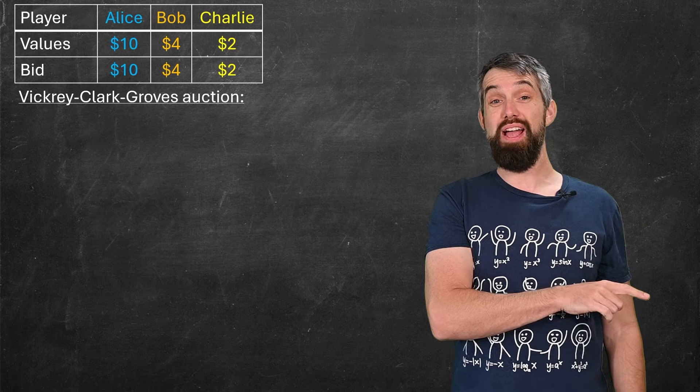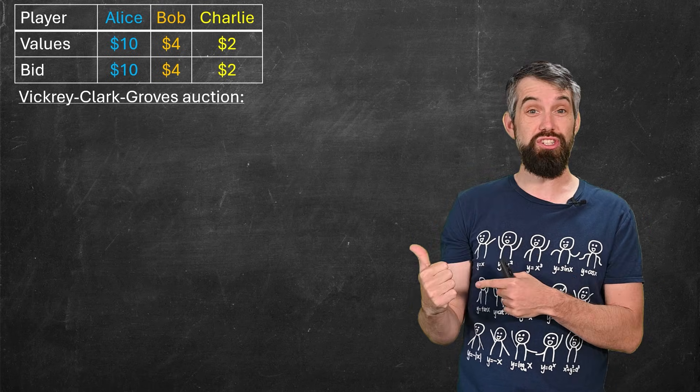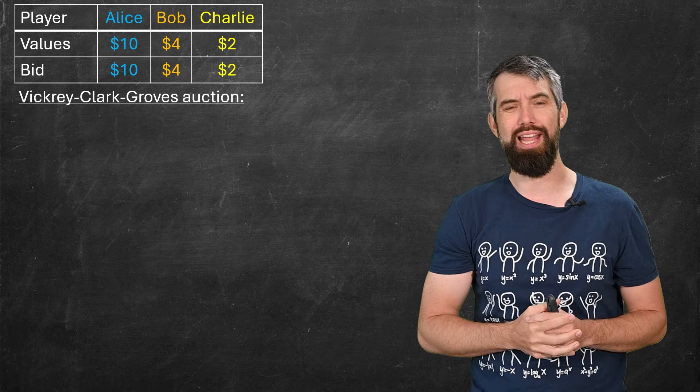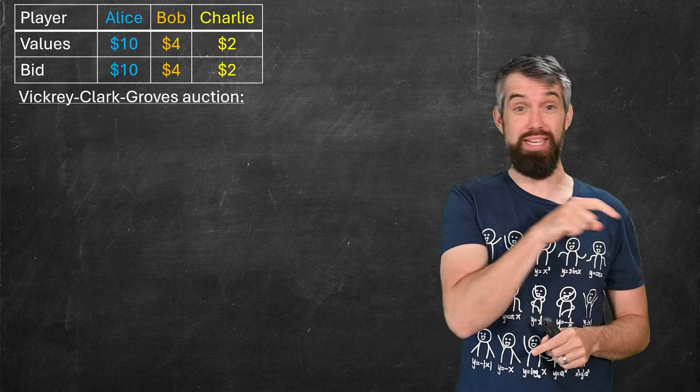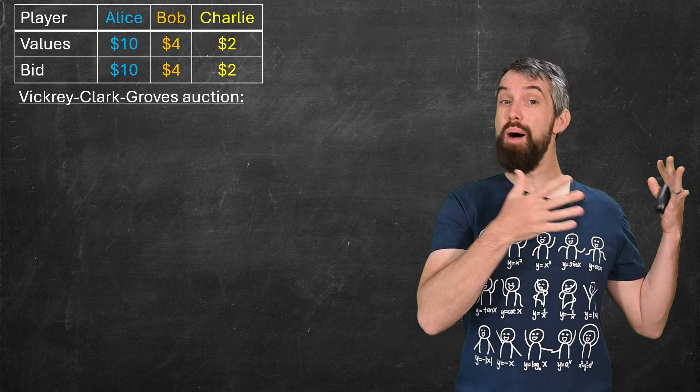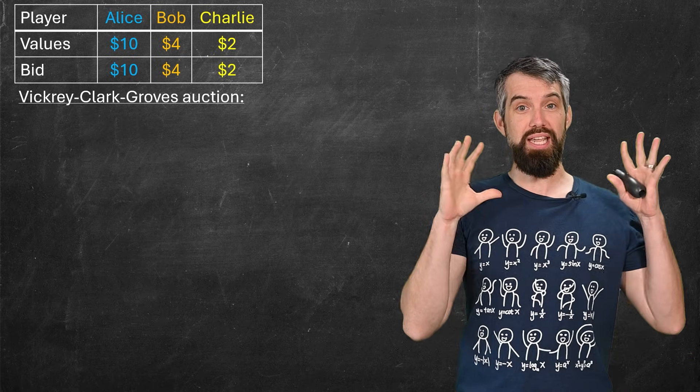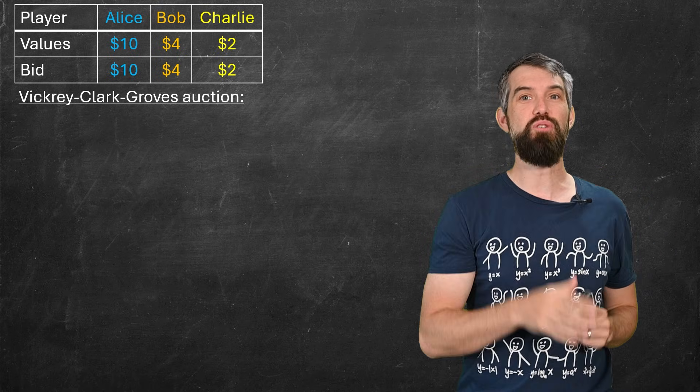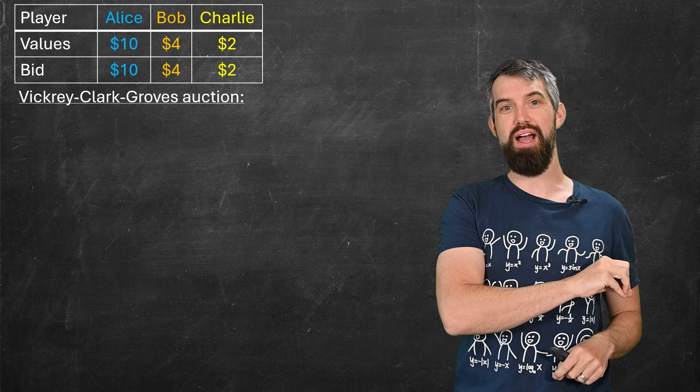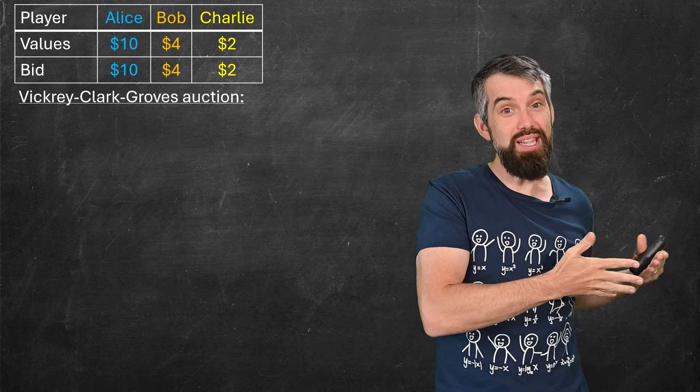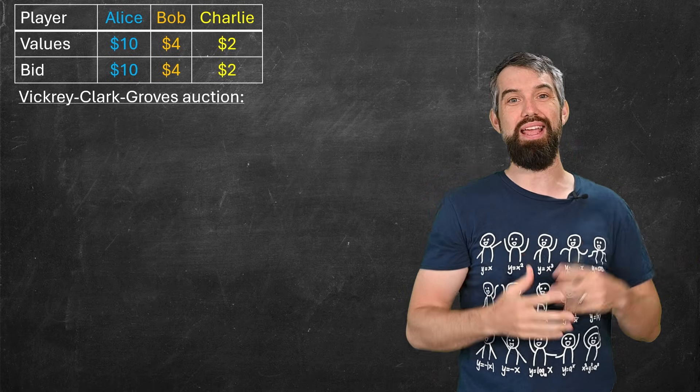Okay, but you might be unsatisfied because you're like, well, these generalized second price auctions, despite the envy-free criterion, still aren't truthful. Like, could they have a different system that actually did incentivize truthfulness among the bidders for these slots? Well, it turns out, yes. There is another auction, which is the Vickrey-Clark-Groves auction style. And I really love it, and so I wanted to share it with you, even though it isn't the most commonly used one to sell internet ads today.